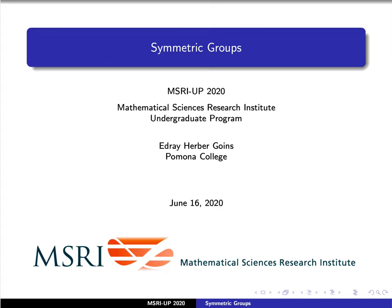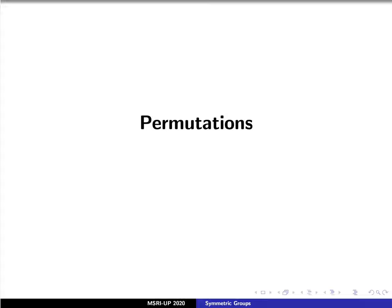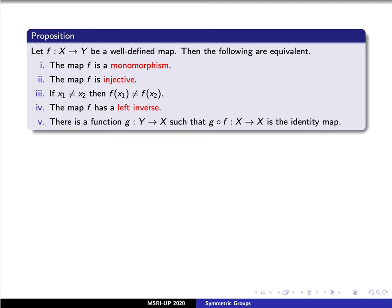Today we'll discuss properties of symmetric groups. Let's first recall some ideas from a previous lesson about permutations. Given a function f that is a well-defined map, we have the idea of injectivity, or a monomorphism. The idea is that if x1 is different from x2 in the domain X, then we want f of x1 to be different from f of x2 in the codomain Y. This is equivalent to saying that our function has a left inverse, which we denote here by g.